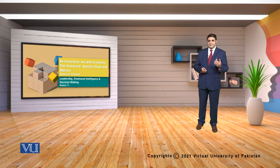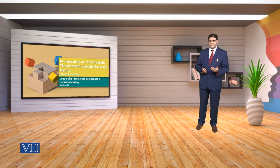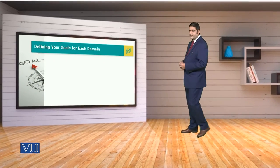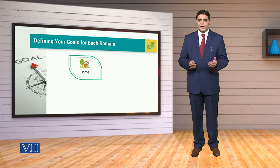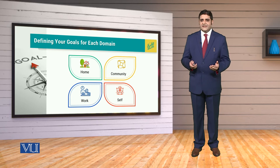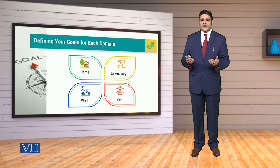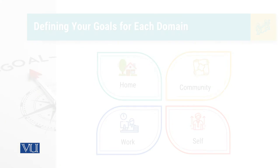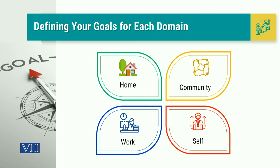Those specific goals and matrices are going to help us evaluate our experiments in terms of our stakeholders. When we talk about our stakeholders, remember that we have got 4 domains: the home, the community, the work, and the self — these are our North, South, East, and West. These domains encompass us in a 360-degree perspective and we are actually composed of these 4 perspectives.